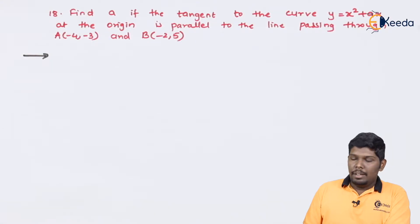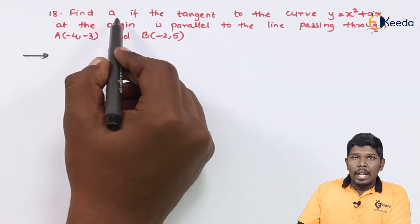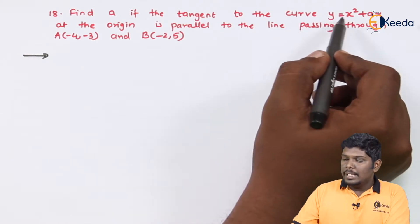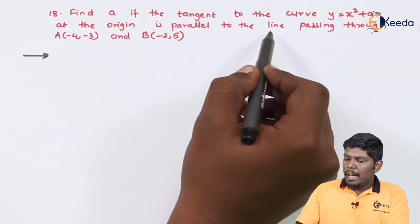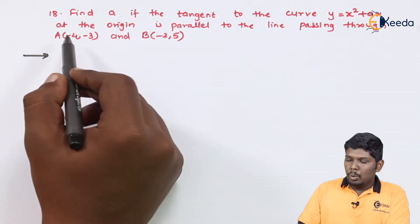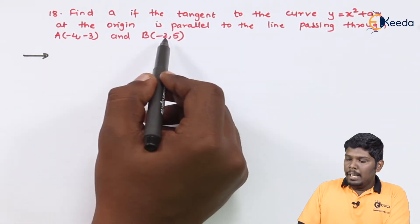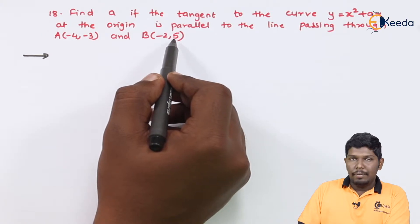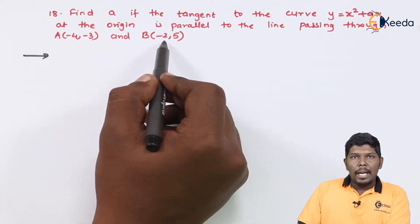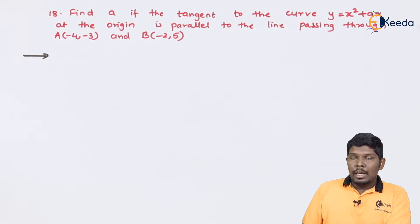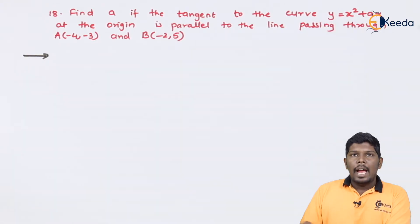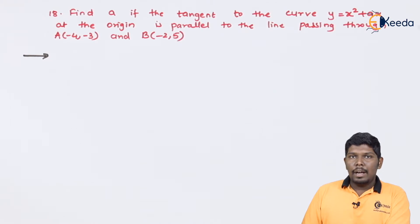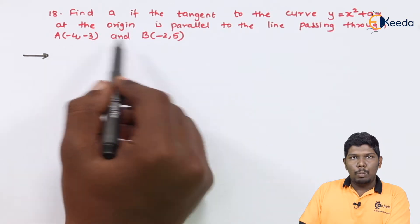In problem number 18, we have to find 'a' if the tangent to the curve y = x² + ax at the origin is parallel to the line passing through points (-4, -3) and (-2, 5). It is given that there is a curve y = x² + ax, and the tangent to that curve is parallel to a line passing through these two points.